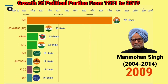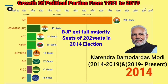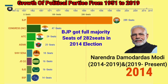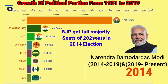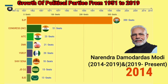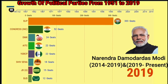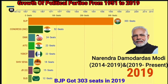In the 2014 general election, the BJP got 282 seats with a full majority and formed a government. Narendra Modi became the Prime Minister of India from the BJP party. In the 2019 election also, the BJP got a full majority with 303 seats. So, Narendra Modi is the current Prime Minister of India at present.